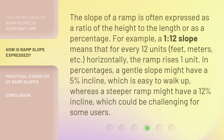The slope of a ramp is often expressed as a ratio of the height to the length, or as a percentage. For example, a 1:12 slope means that for every 12 units — feet, meters, etc. — horizontally, the ramp rises one unit. In percentages, a gentle slope might have a 5% incline, which is easy to walk up, whereas a steeper ramp might have a 12% incline, which could be challenging for some users.